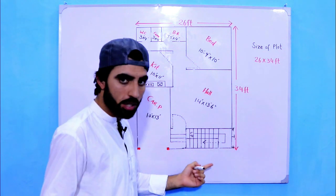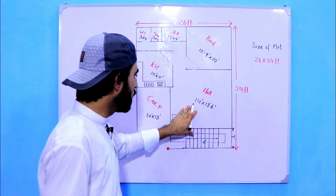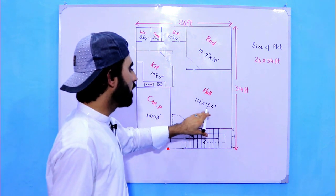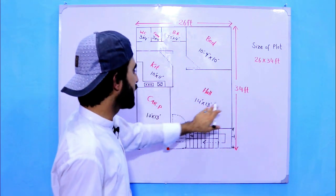Now this is a hall and also you can use it for living room which size is 14 feet by 13.5 feet. Its length is 14 feet and its width is 13.5 feet.